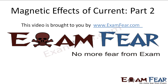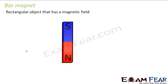This video on magnetic effects of current part 2 is brought to you by examfear.com. We are starting this lesson with bar magnets even though the lesson is about magnetic effects of current. In a previous lesson we talked about heating effects of current — how an electric current passing through a wire can dissipate heat. Now we will see how an electric current passing through a wire can produce magnetic effects and how those effects are helpful to us.